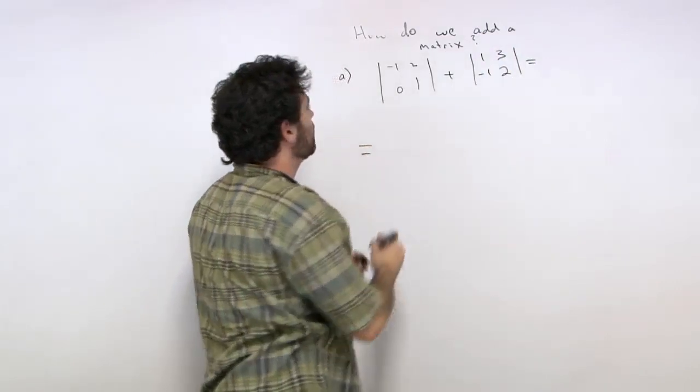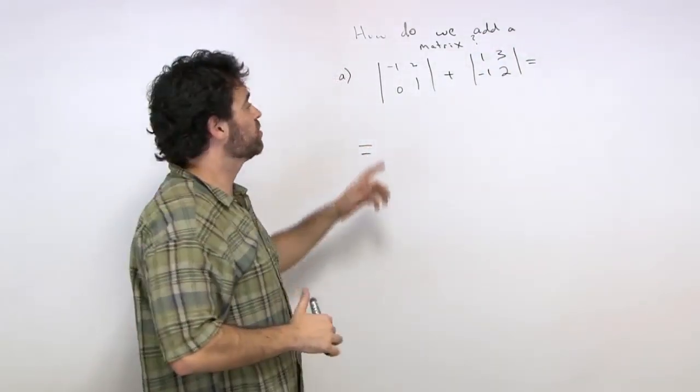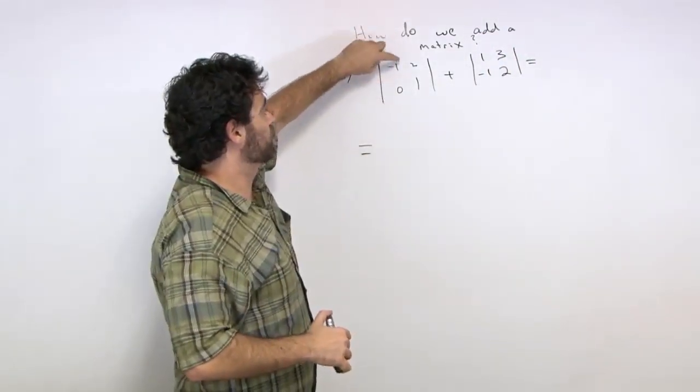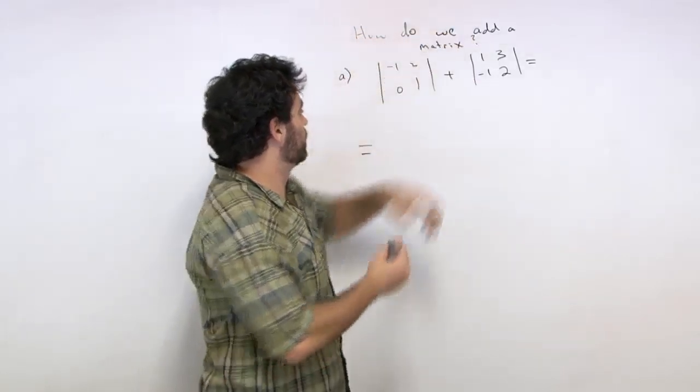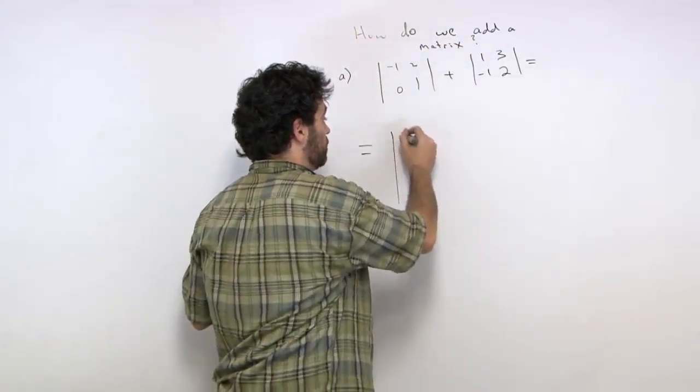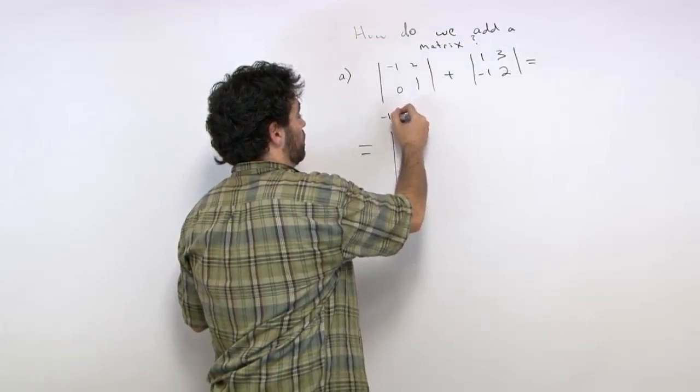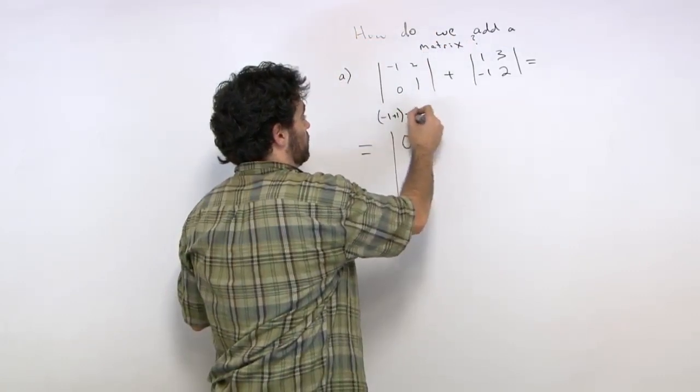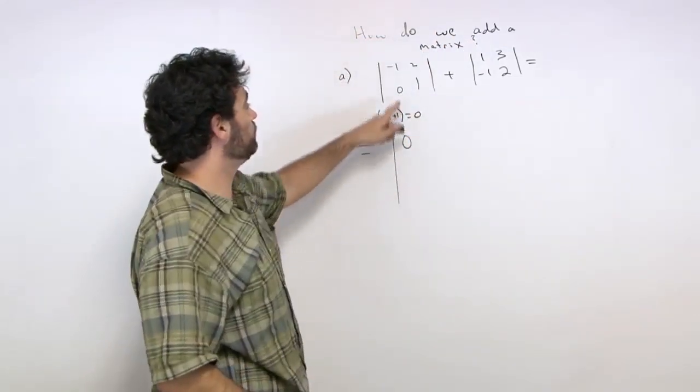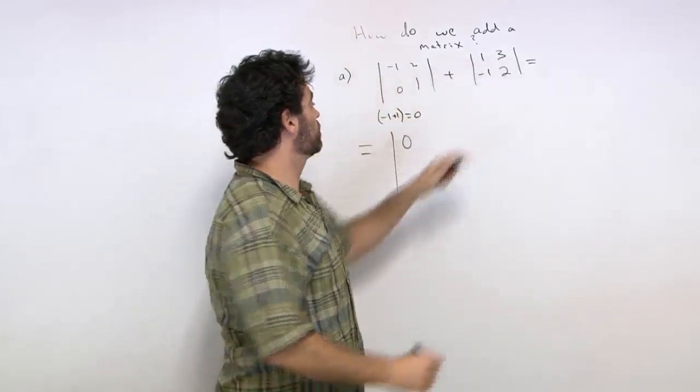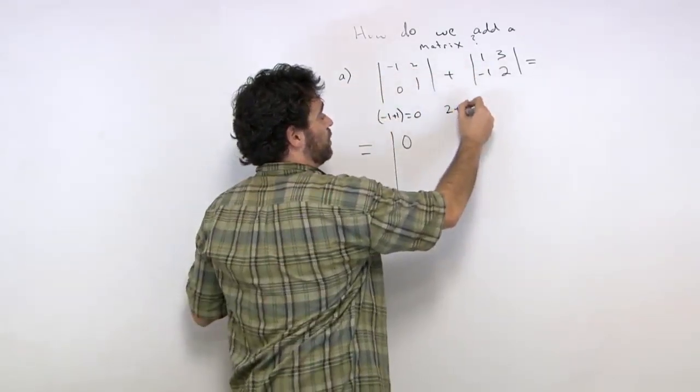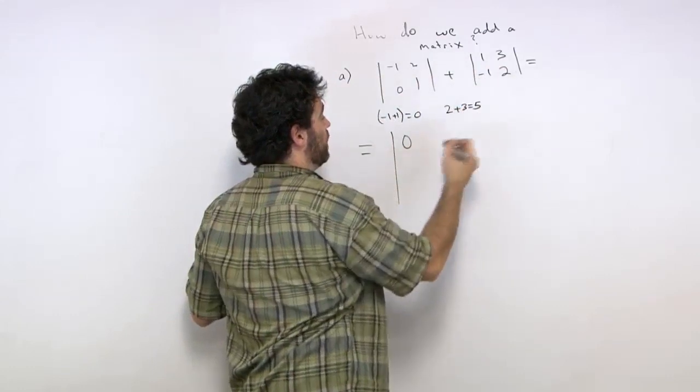So what is that going to give us? Not too bad. Adding matrices is not too bad. We're going to add up our entries. Okay, negative 1 plus 1 is 0. So we say negative 1 plus 1 equals 0. Then we're going to go 2 plus 3. 2 plus 3 gives us 5.